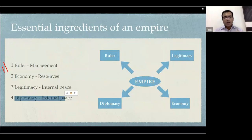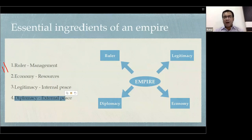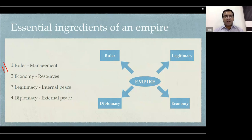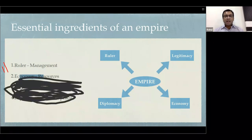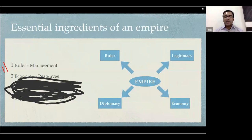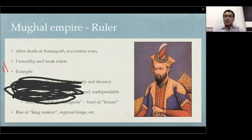All these factors have always been important in the context of empires. As we will see in a few minutes, how the Mughal Empire's decline was related to these factors. The Mughal Empire was a vast, major power in the Indian subcontinent, but because they started creeping into many problems in these four factors, they started going into a decline.